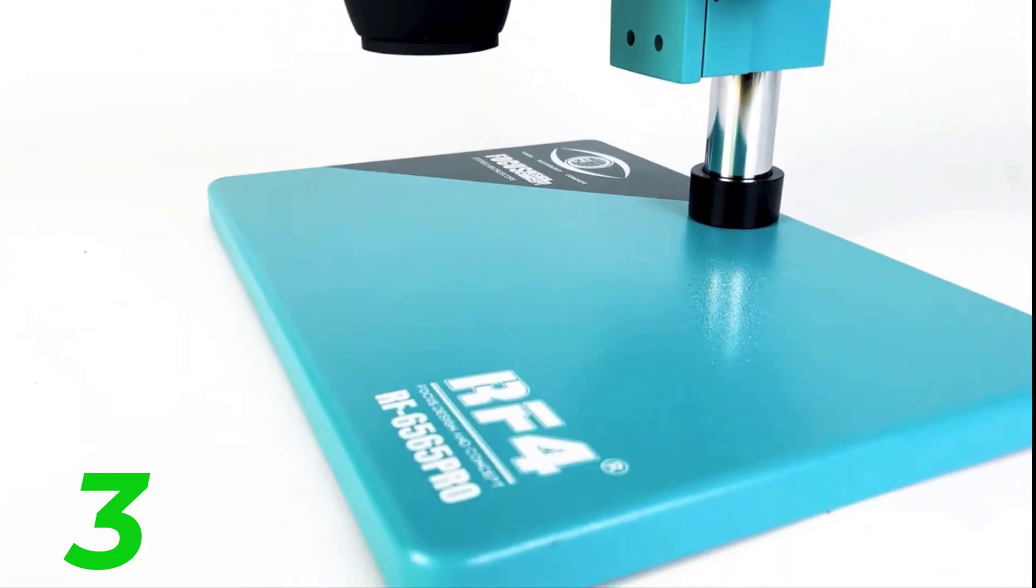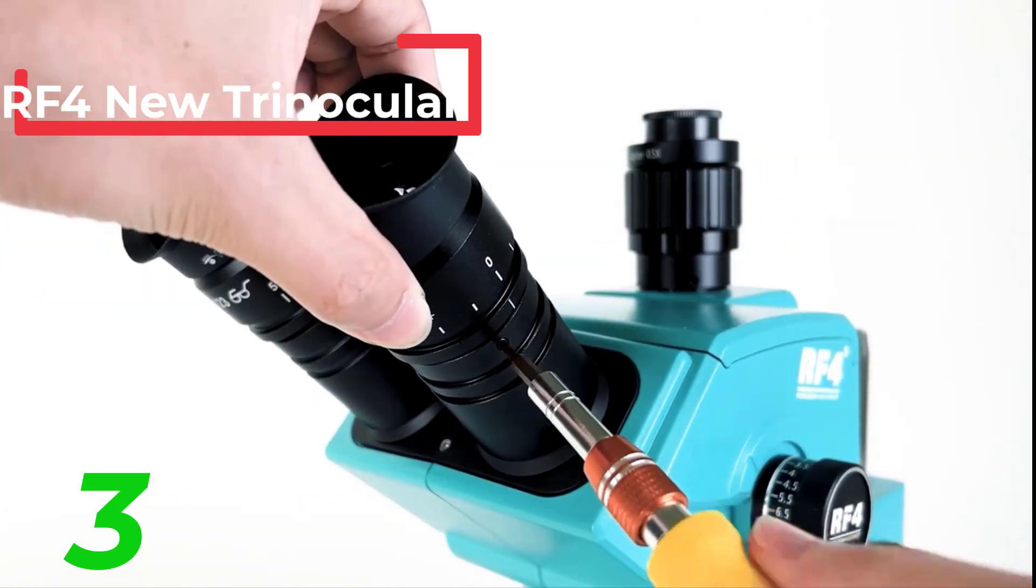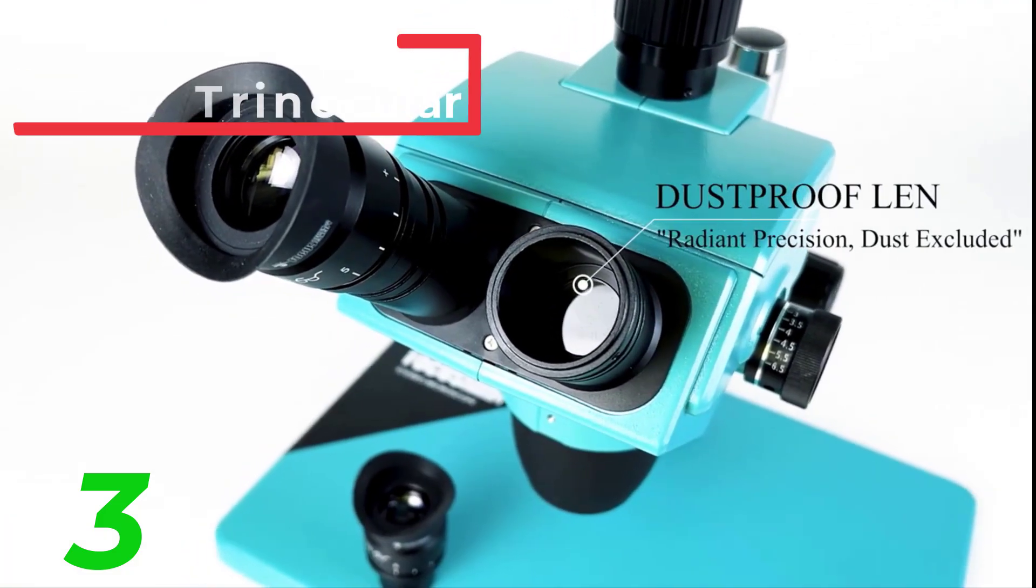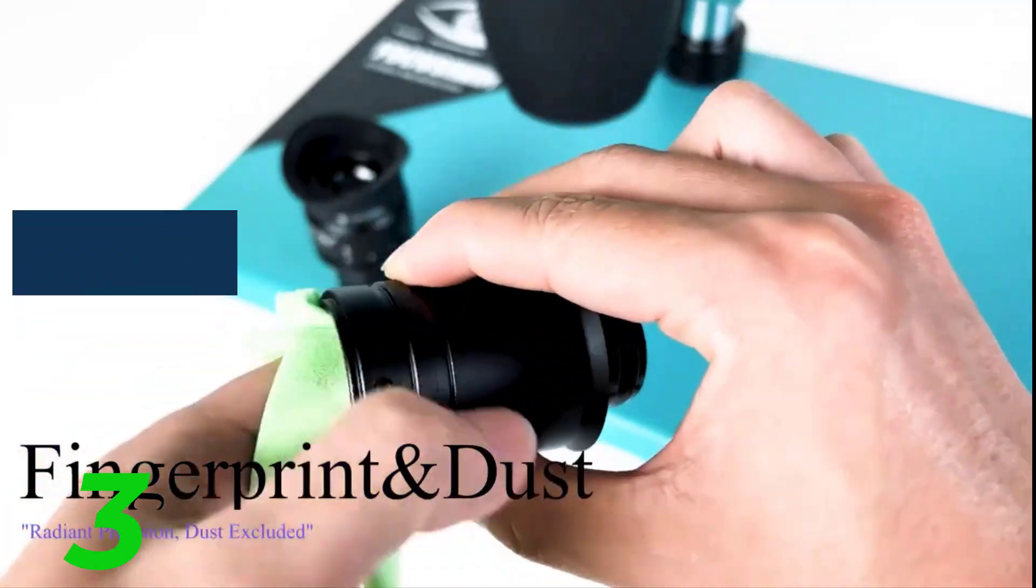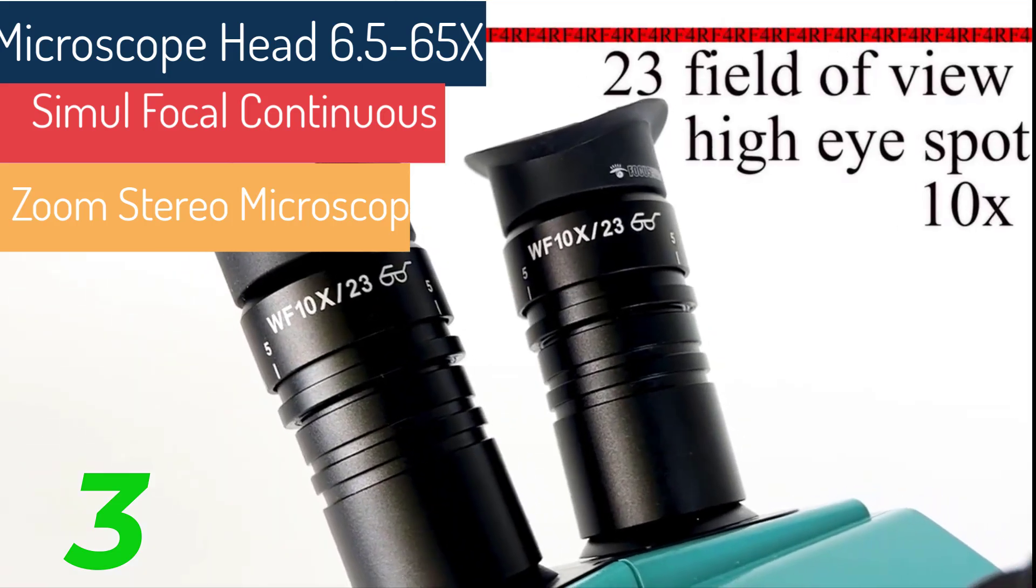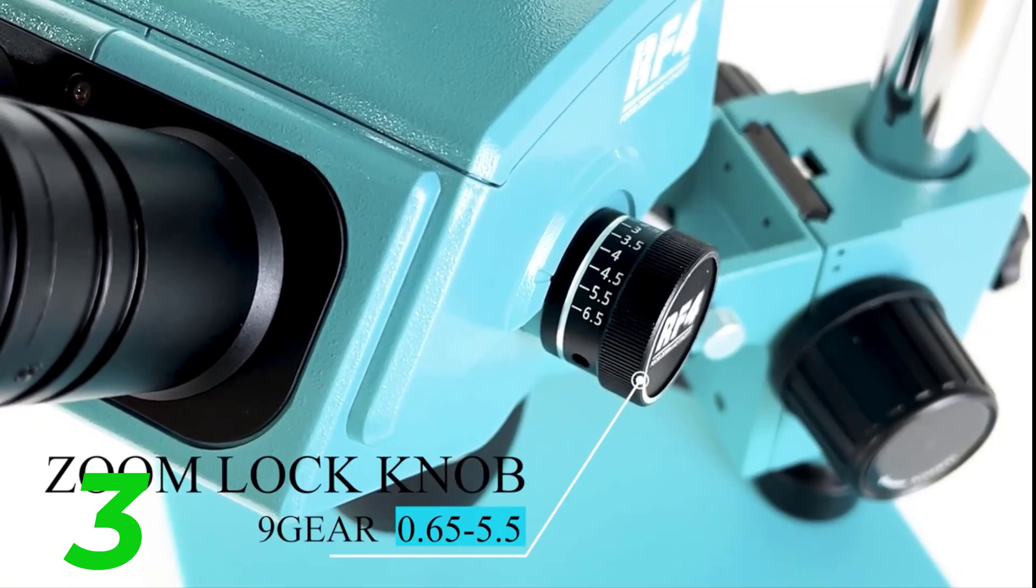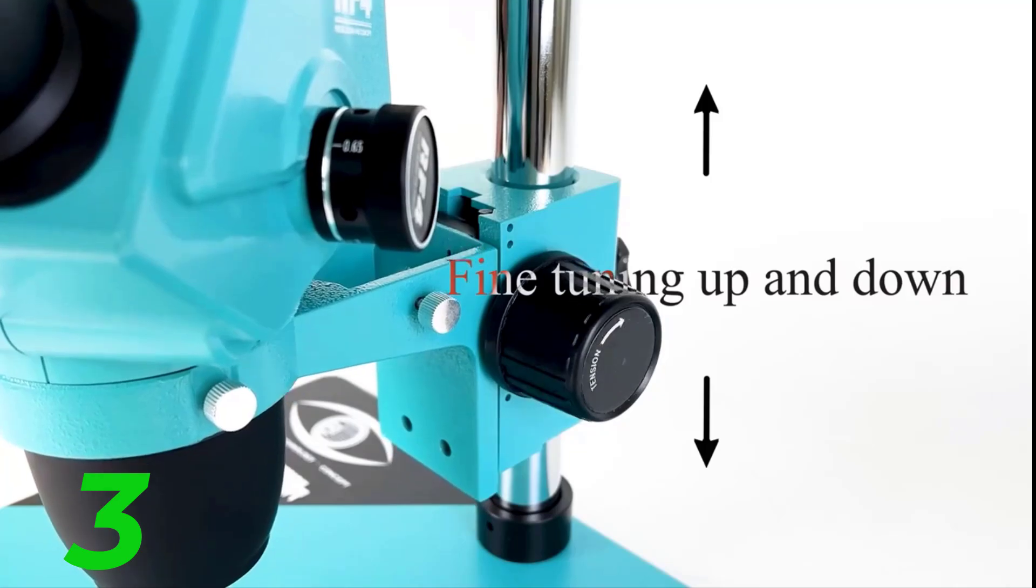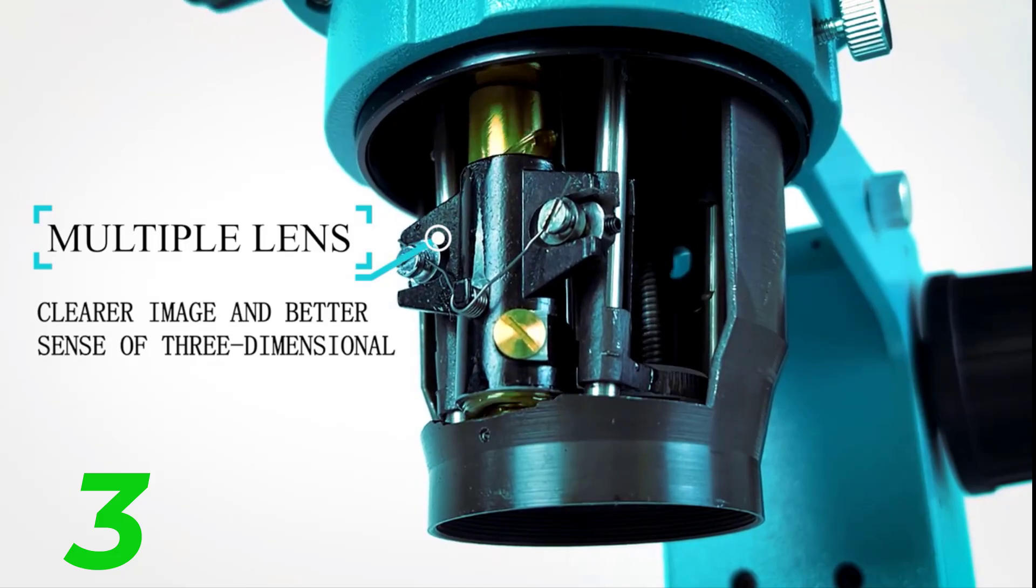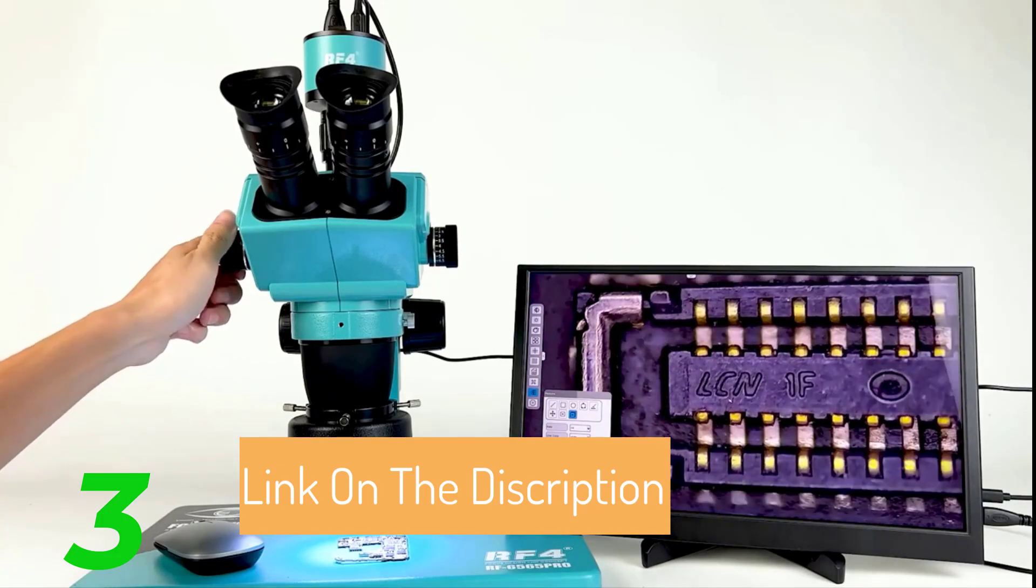The microscope comes with an aluminum carry case offering perfect protection for the device and its accessories, making it an excellent gift for microbiological enthusiasts. With the support of a video capture card, the microscope can take still photos and record videos, enhancing its functionality for documentation and sharing purposes. In summary, the RF6565 P-Rod E2 microscope is a versatile and high-quality instrument suitable for a wide range of scientific applications. Its advanced features, ergonomic design, and included accessories make it a top choice for anyone in need of a reliable and comprehensive microscope.